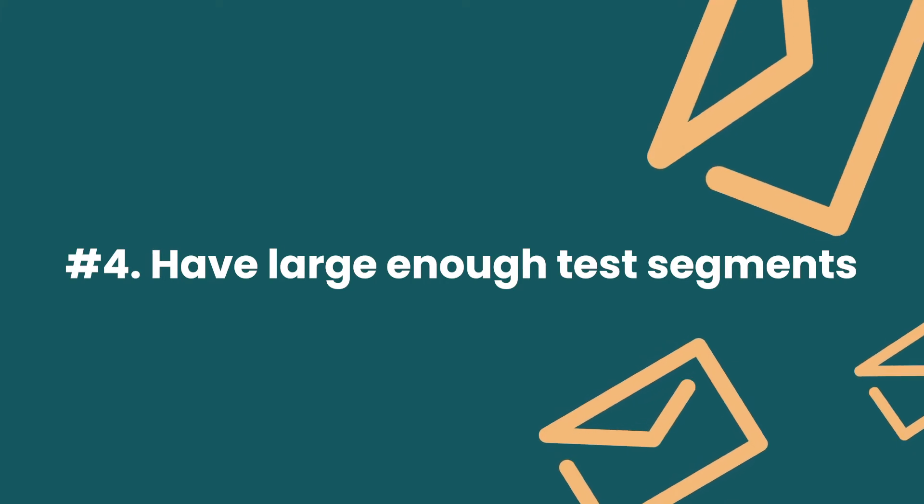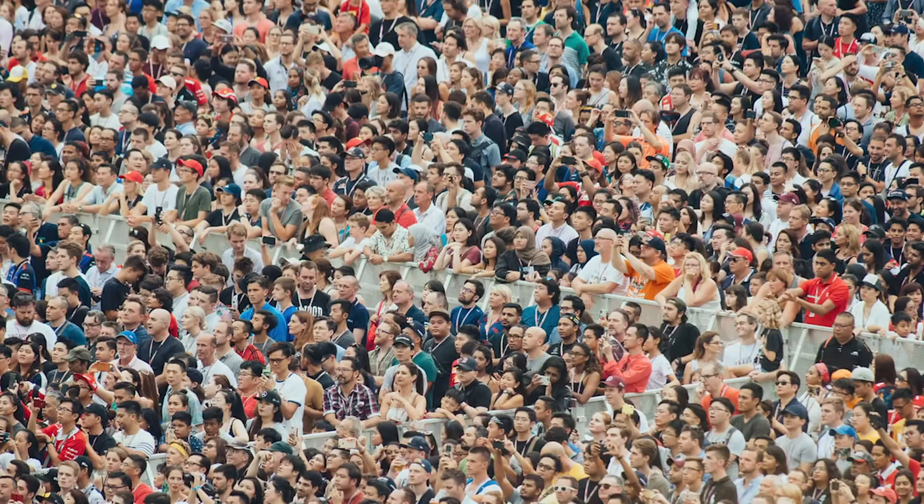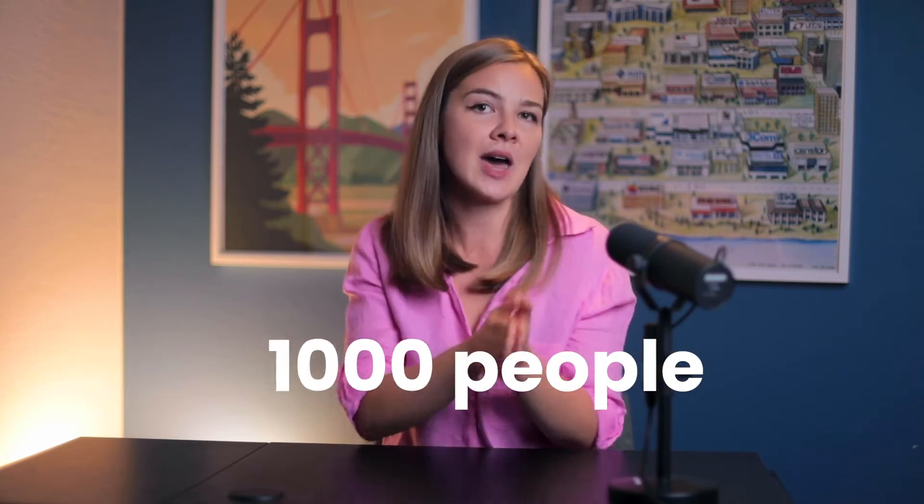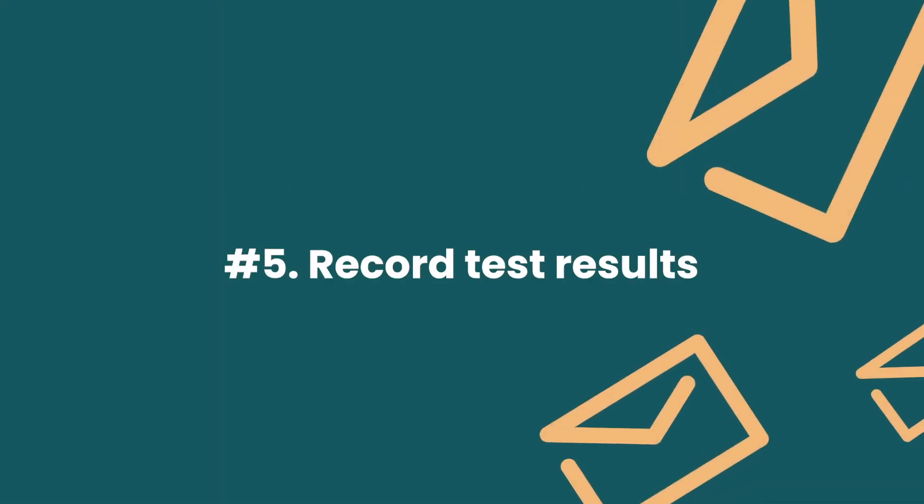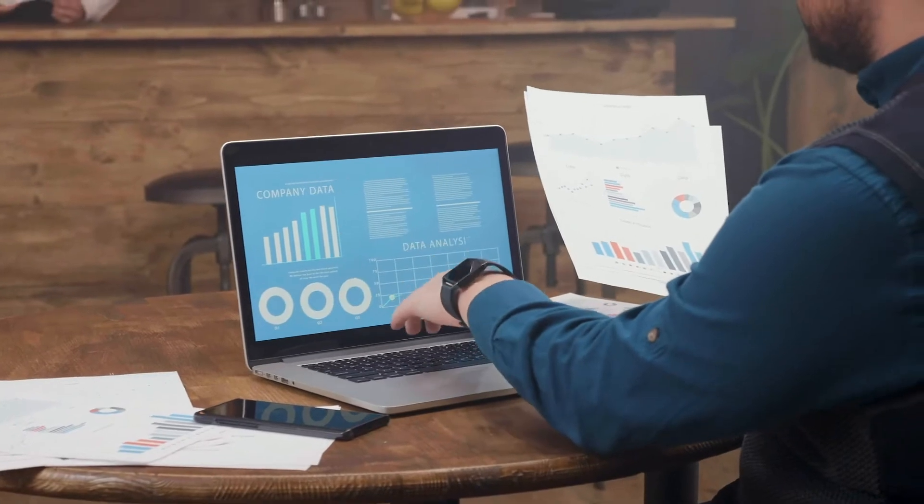Number four: have large enough test segments. There's a great deal of science in A/B testing, and if you want to get statistically significant results — translation: reliable results — you want to send each variation to a big enough sample. The size of your sample will really depend on the overall size of the list; however, it should at least be a thousand people, and better yet, three thousand people. When you have fewer people, your test results may end up being a fluke. Finally, number five: record test results. A/B testing is useless if you're testing all the time and not implementing what you learn. Create a spreadsheet and keep track of all of your learnings.